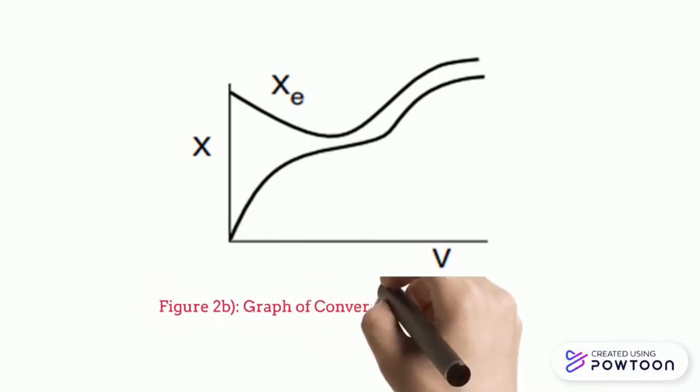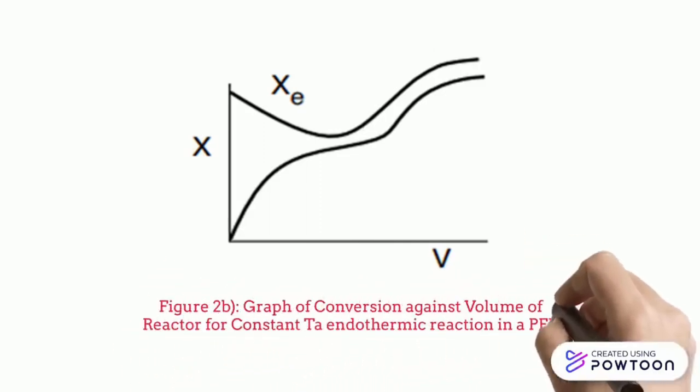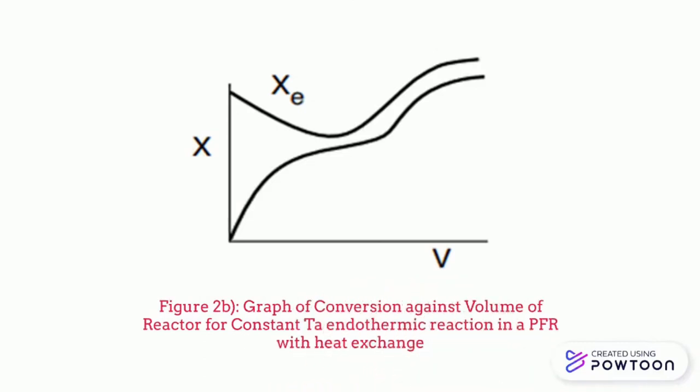Figure 2B shows the graph of conversion against volume of the reactor for constant TA, for reversible exothermic reaction in a PFR with heat exchange.